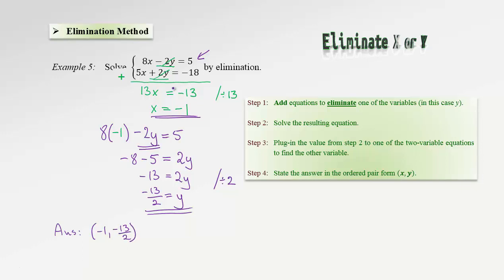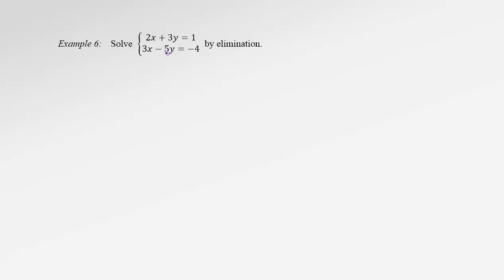However, not every system of equations will be so friendly. Not every system will have opposite coefficients by the same variable so that when we add them, they cancel. Let's see some other systems. This time we don't have opposite coefficients for either of the variables — not by x, not by y. However, we can make them opposite.